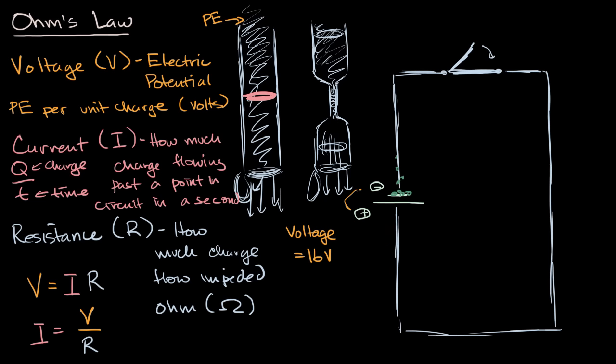And the way that we denote resistance is with a jagged line. And so let me draw resistance here. So that is how we denote it in a circuit diagram. And let's say the resistance here is eight ohms.